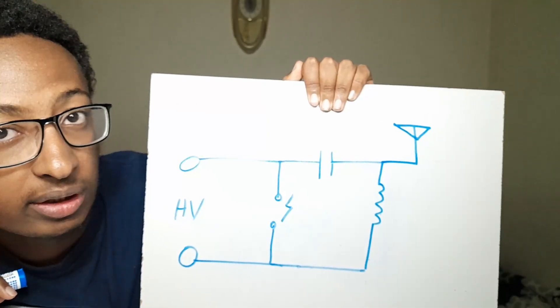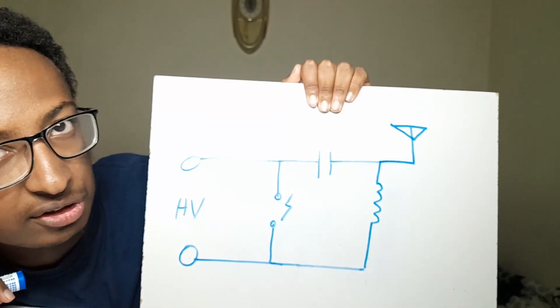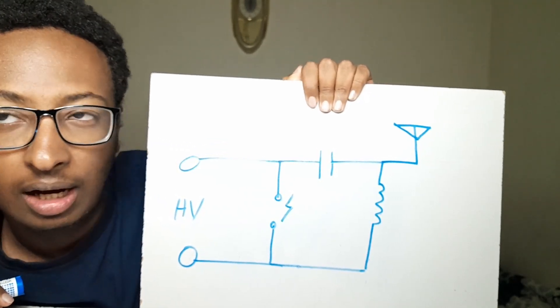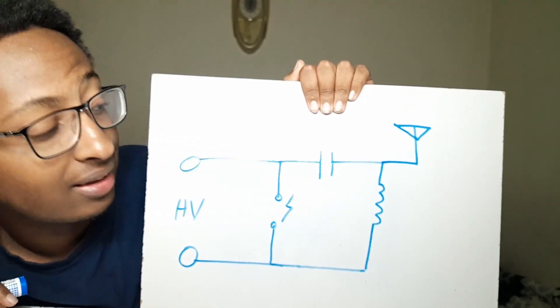According to my research, a transmitter consists of mainly three components: a capacitor, inductor, and a high voltage source, and possibly an antenna. The way it works is very easy, well relatively easy. The point of having a capacitor and inductor is to create a resonance frequency.